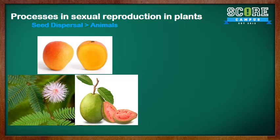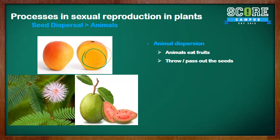Looking at animal dispersal: animals eat fruits and then throw away their seeds. Like a mango — animals cannot eat the mango seed because it's very large, so they usually throw it away, dispersing it. Some animals eat the seeds and pass them out in their droppings, for example the guava. And others, like the mimosa plant, have seeds that get stuck on the animal's body because they have hooks, also helping to disperse them.